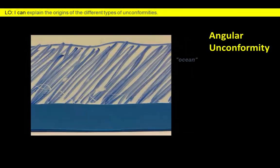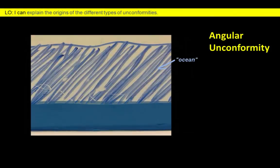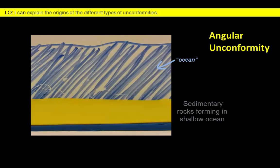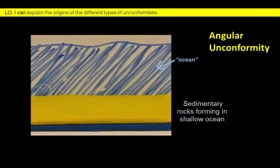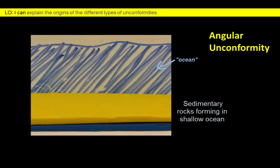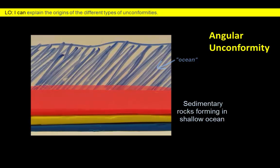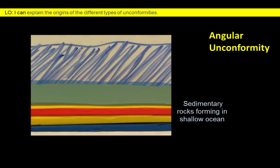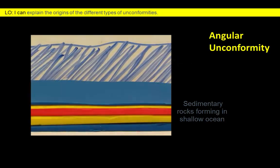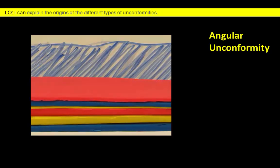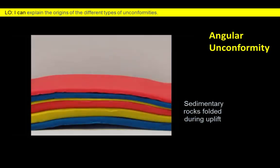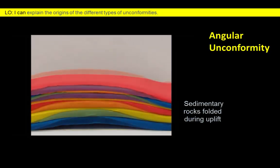We will start with angular unconformities. First, imagine a series of horizontal layers of sedimentary rock forming under marine conditions. Next, we are going to uplift these rocks to the surface, similar to what might happen at a convergent plate boundary. During uplift the rock layers may be tilted, faulted, or folded so that they are no longer in their horizontal configuration.